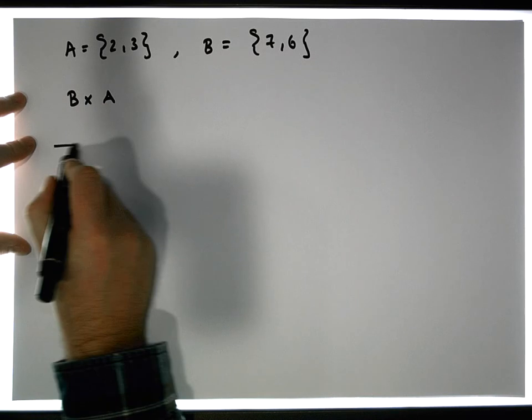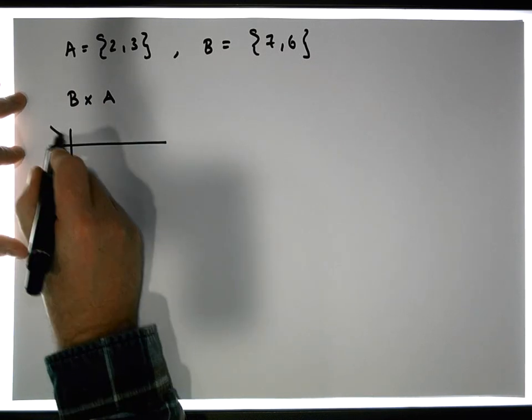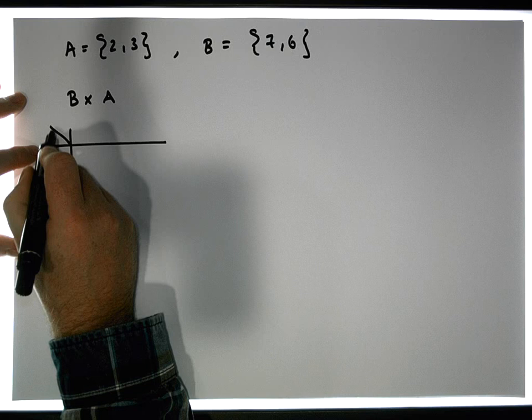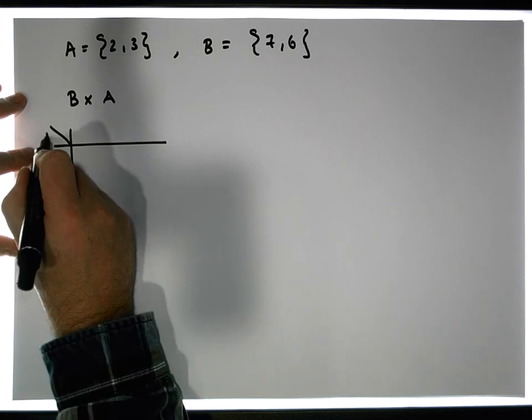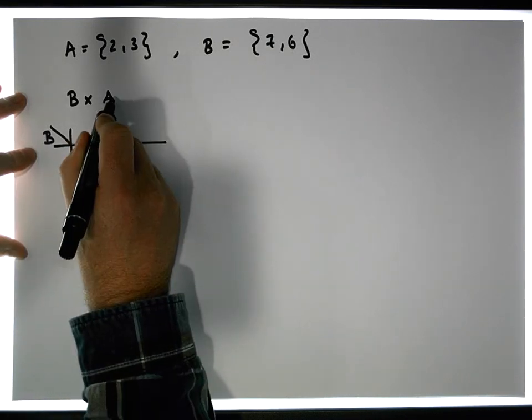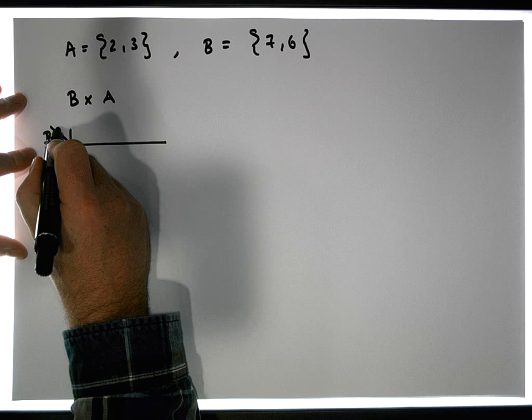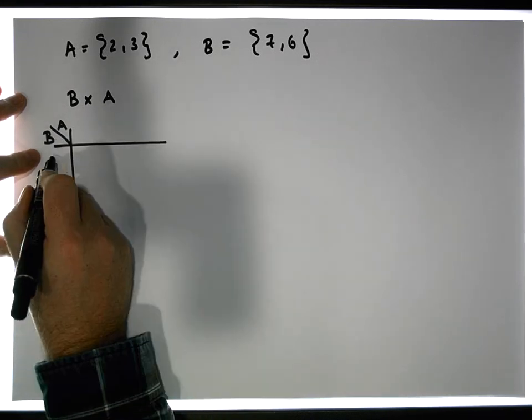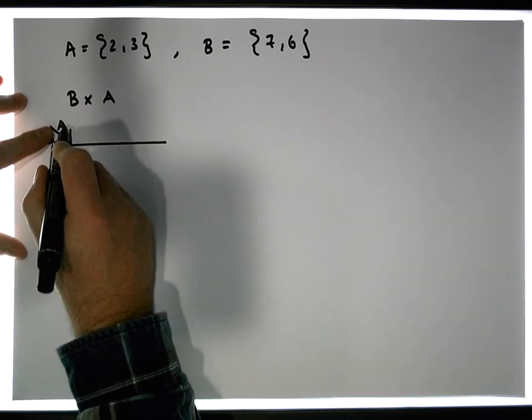So let's use our construction technique. We build our table. The domain elements are listed down this column, so B. And the range elements are listed across this row, so that's going to be A. So B is the value 7, 6, and A are the values 2, 3.